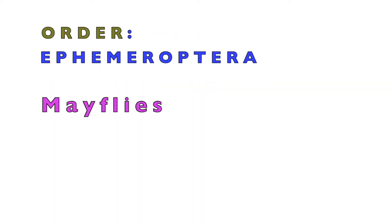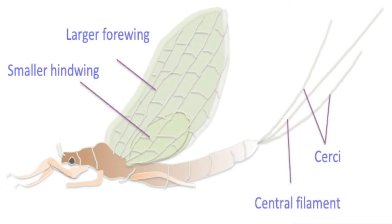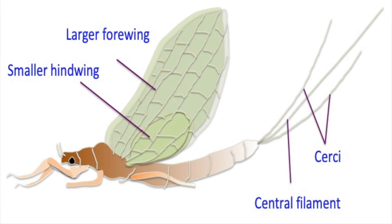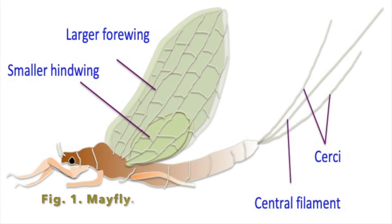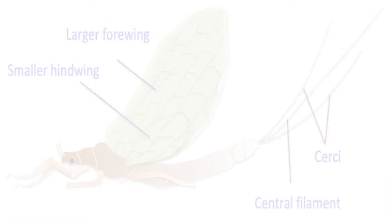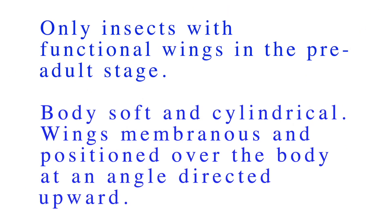Order Ephemeroptera: mayflies come under this order. These are the only insects that have functional wings in the pre-adult stage. The sub-imago stage precedes the imago — the imago is the last stage of insects, also called the adult, which is matured to reproduce.